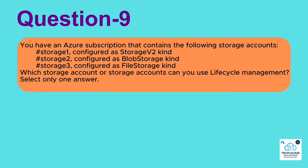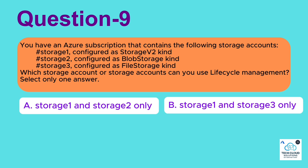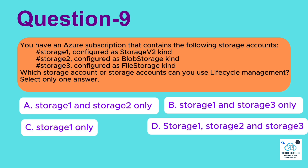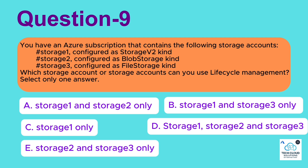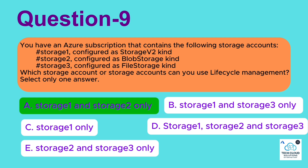Question 9: You have an Azure subscription that contains the following storage accounts. Storage 1 — configured as storage V2 kind. Storage 2 — configured as blob storage kind. Storage 3 — configured as file storage kind. Which storage account or storage accounts can you use lifecycle management on? Select only one answer. A. Storage 1 and Storage 2 only. B. Storage 1 and Storage 3 only. C. Storage 1 only. D. Storage 1, Storage 2 and Storage 3. E. Storage 2 and Storage 3 only. Correct answer: Storage 1 and Storage 2 only.